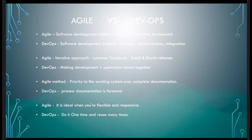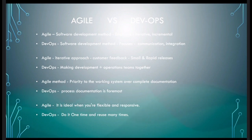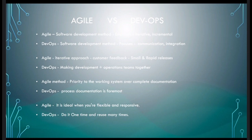Question: Most of the time, agile and DevOps go together — they're not separate entities. DevOps is an evolution from agile. In DevOps, we automate the regular processes we do in an agile process — that's why DevOps is called an extension of agile.